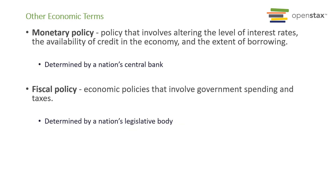Later on toward the end of semester we're also going to study different types of government policies. There is something called monetary policy — when the government uses interest rates and money supply to influence our economy. That's conducted by the central bank of each country. For the US, the central bank is called the Federal Reserve. If you look at the $1 bill you have, on top it says 'Federal Reserve Note.' The Federal Reserve controls the money supply, which is how our government conducts monetary policy, because how much money we have in the economy can impact our economic conditions.